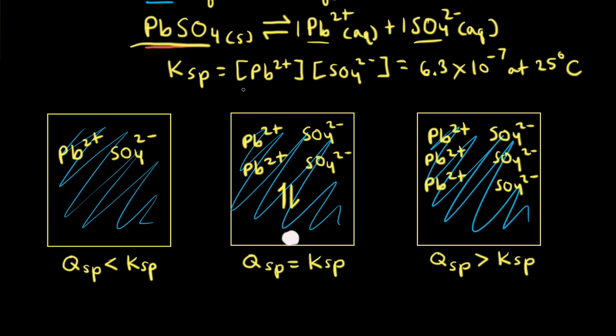The concentrations of lead two plus and sulfate in the Ksp expression are equilibrium concentrations. For our problem, we're going to calculate Qsp, which has the same form as Ksp. The difference is the concentrations can be at any moment in time. We're going to calculate Qsp at the moment our two solutions are mixed, and then compare Qsp to Ksp. I've drawn out some diagrams to help us understand how Qsp compares to Ksp and what that means for the solution.